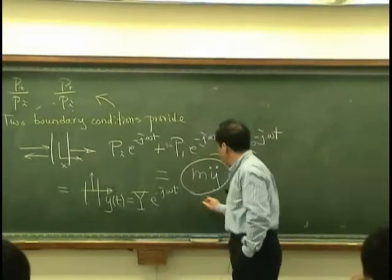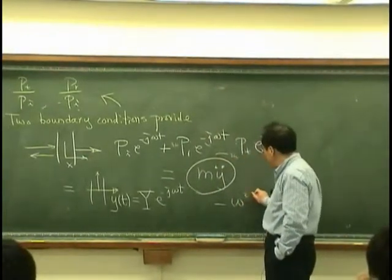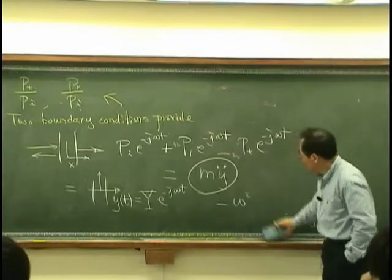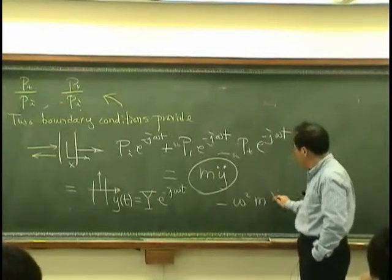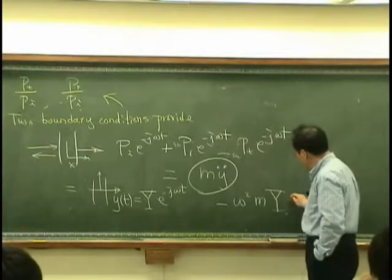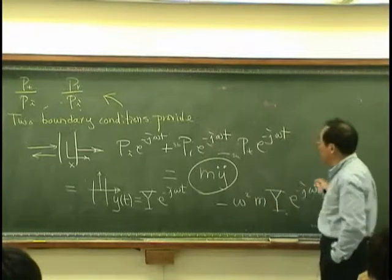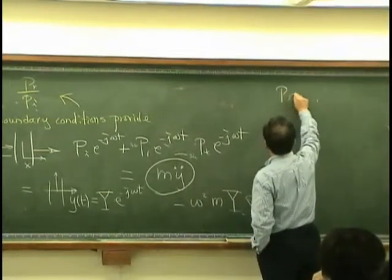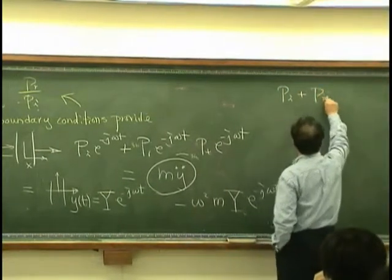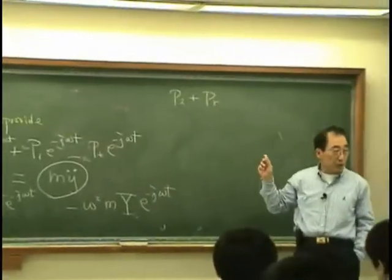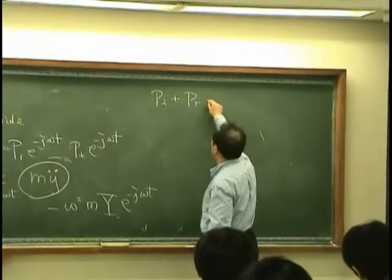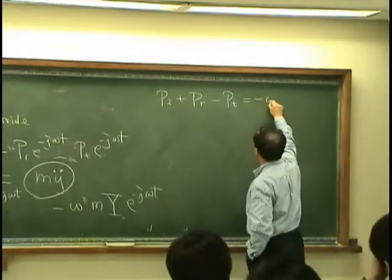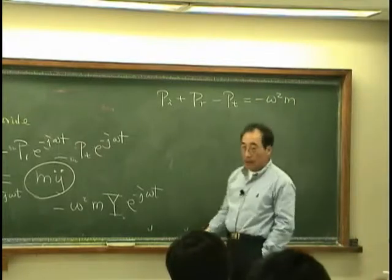Okay. And, this is minus omega square y, sorry, omega square m, y, exponential minus j omega t. Therefore, what I can write is, pi plus pr, those are the complex amplitude of sound pressure, minus pt, minus pt, is equal to minus omega square m.